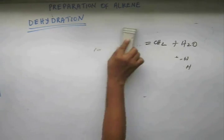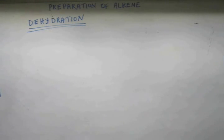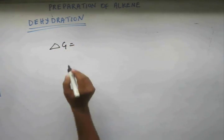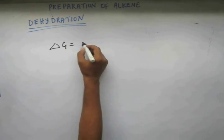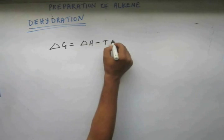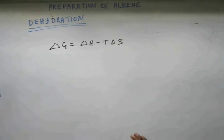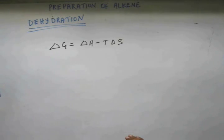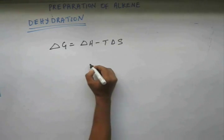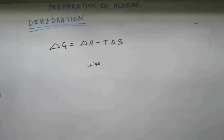Now let's discuss the thermodynamics of this. You have the important formula: ΔG = ΔH − TΔS. ΔG gives the change in Gibbs free energy, and when ΔG is negative, the reaction is spontaneous. In this reaction, energy has to be given as we apply heat. Two stable bonds have been broken and one unstable pi bond is being formed, so energy-wise alkene will have higher energy. Therefore heat has to be given, making ΔH positive.